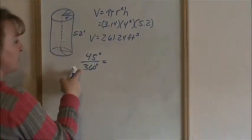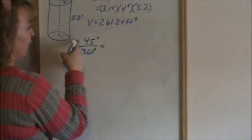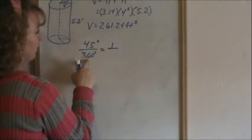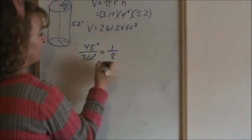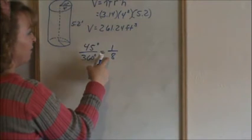45 over 360 will reduce, both numbers will reduce by 45. So that would be 1, 360 divided by 45 is 8. So we want 1 eighth of the volume.